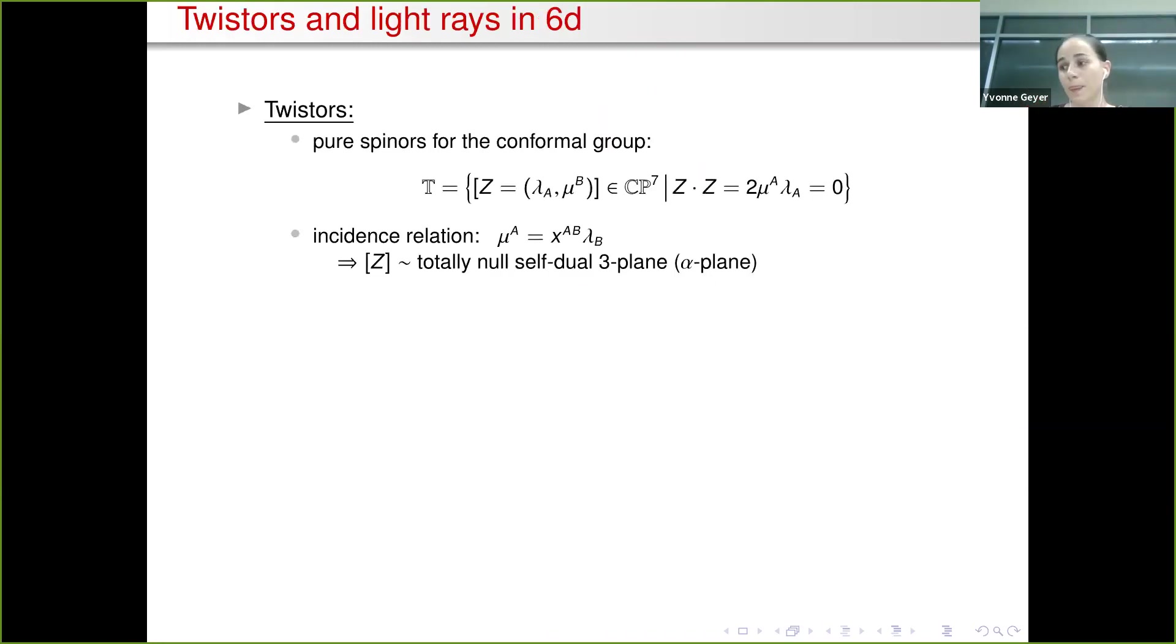After this warm-up, let's have a look at twistor space for six-dimensional Minkowski space. In any dimension we can define pure spinor twistors as pure spinors for the conformal group. In this case for SO(8), we have a fundamental and anti-fundamental Weyl spinor, and purity tells us that Z dot Z has to be zero. Very similarly to what happens in four dimensions, the incidence relation in this case tells us that X corresponds to a CP³ in twistor space, and the opposite way around, if we fix a twistor then that corresponds to a totally null self-dual three-plane which we'll still call an alpha plane.